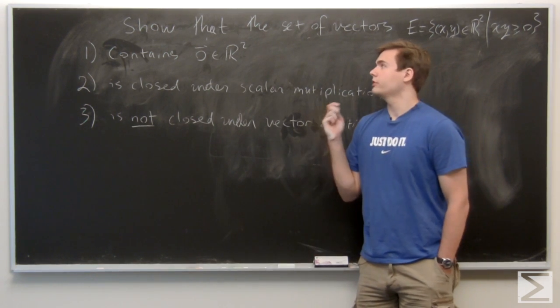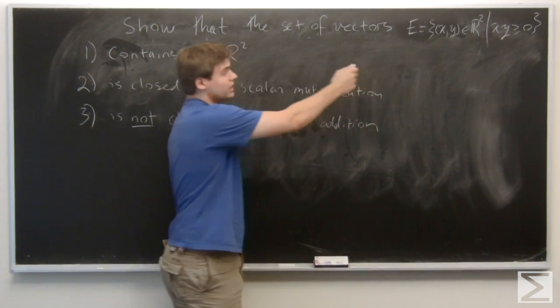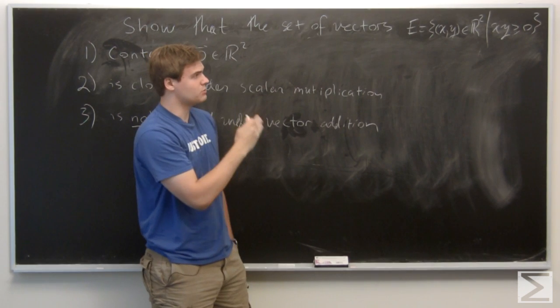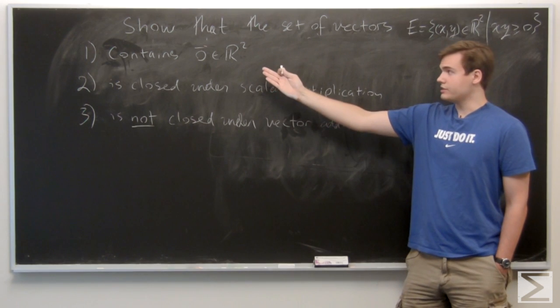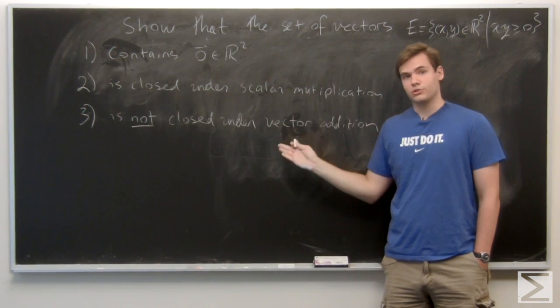So the problem here, we want to show that this given subset E, which consists of the points (x,y) in R², such that x times y is greater than or equal to zero, contains the origin, is closed under scalar multiplication, but is not closed under vector addition.